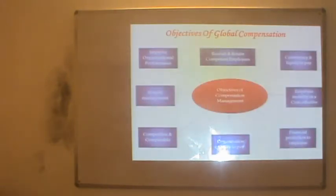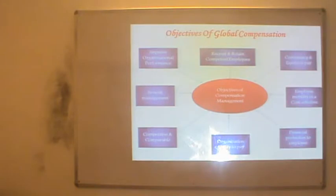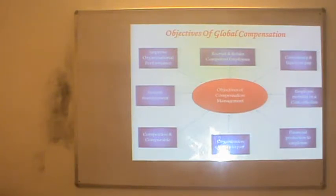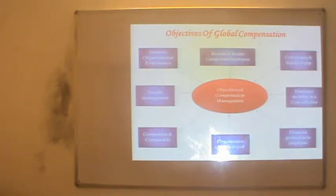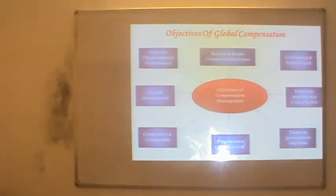What are the objectives of global compensation — that is, what do we actually aim to achieve? The first objective is to improve organizational performance. Overall, if an employee is compensated well, then the idea of getting the best performance can be achieved.